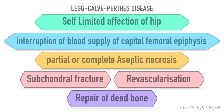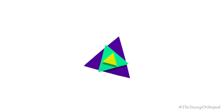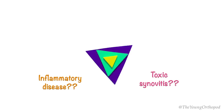The exact cause of Perthes disease is not known. Numerous theories have been proposed, but interruption of vascular supply of the femoral head is the most widely accepted etiologic theory.